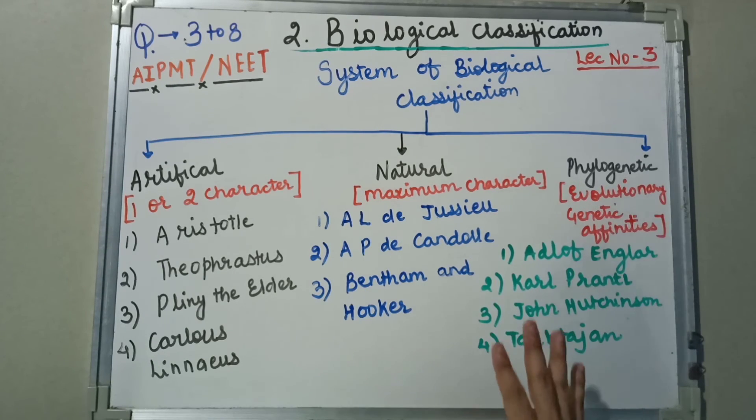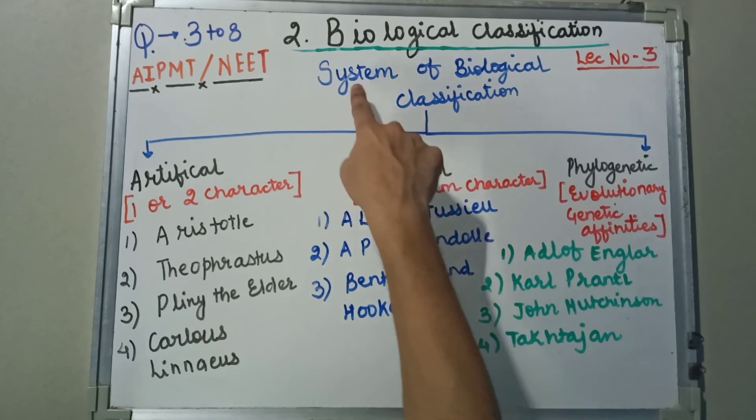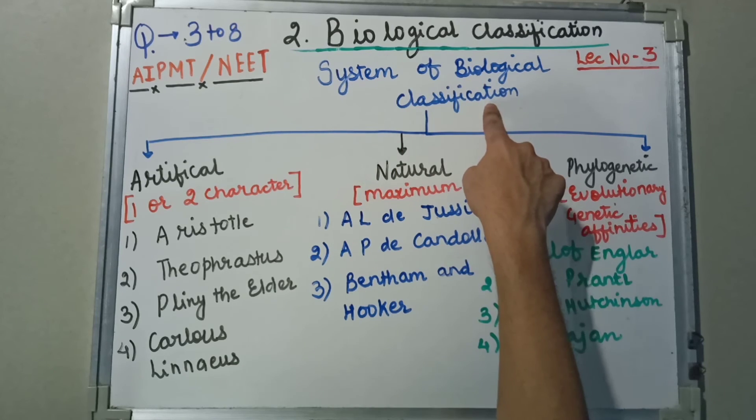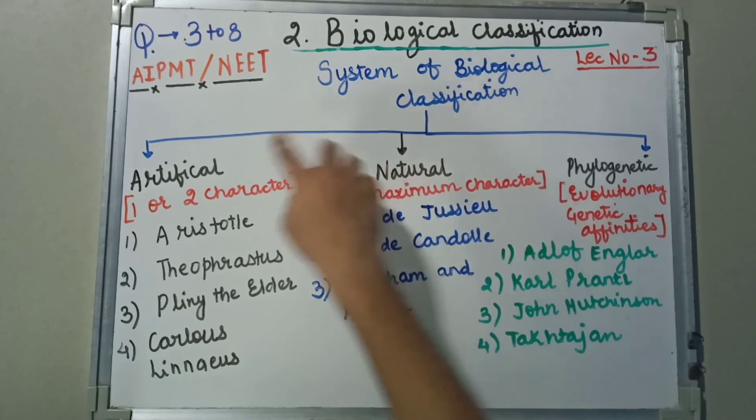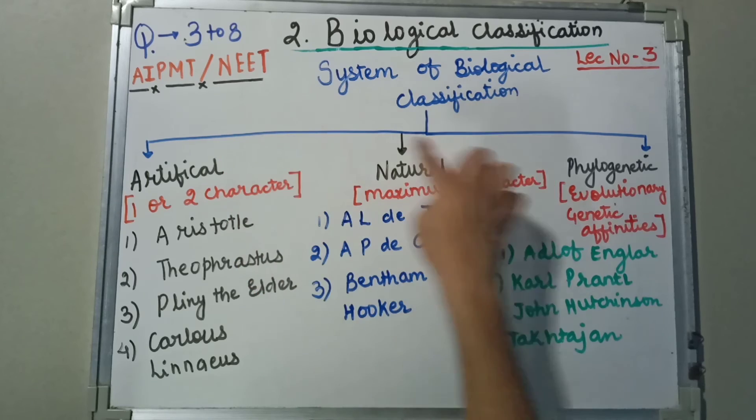We'll quickly revise what we have seen. Today's topic is systems of biological classification. In systems of biological classification we are going to see artificial, natural, and phylogenetic.